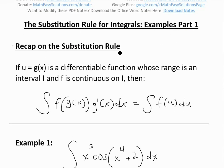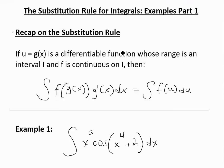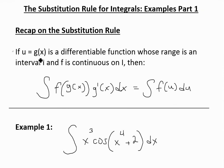To quickly recap on the substitution rule, which I proved in my earlier video — link below — it basically states: if u equals g of x and it is a differentiable function whose range is an interval I, and f is continuous on I, this means g of x is differentiable, and the range I, when plugged into f, is the new domain of f. So f is continuous on whatever values u takes.